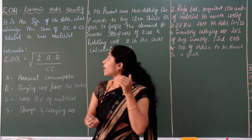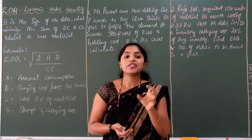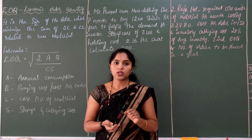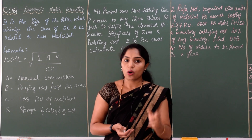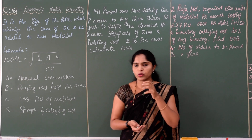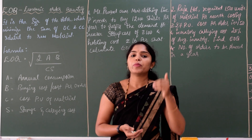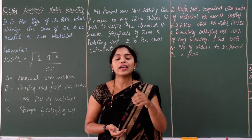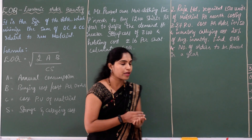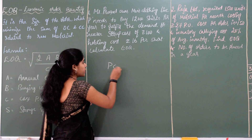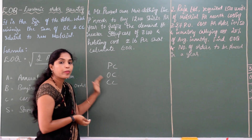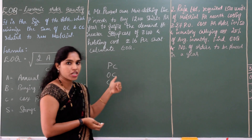Economic Order Quantity is the most optimal method used by an organization to reduce cost while purchasing raw materials. When purchasing raw materials, every organization incurs three types of cost: purchase cost, ordering cost, and carrying cost.